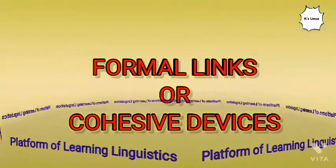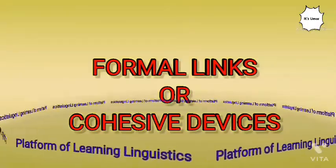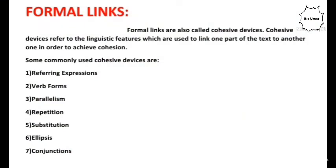Hello guys, welcome to my YouTube channel, Platform of Learning Linguistics. Today we're going to talk about formal links or cohesive devices. Cohesive devices or formal links refer to the linguistic features which are used to link one word, phrase, or sentence to another. Some common formal links are: referring expressions, verb form, parallelism, repetitions, substitutions, ellipsis, and conjunctions.